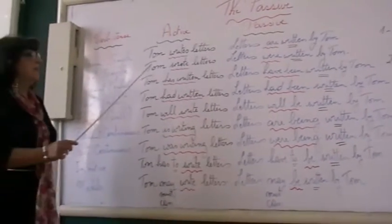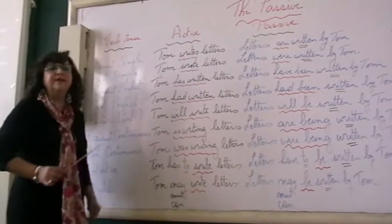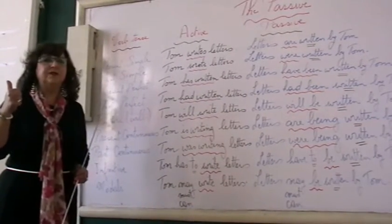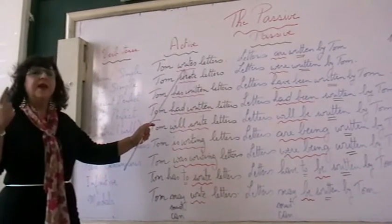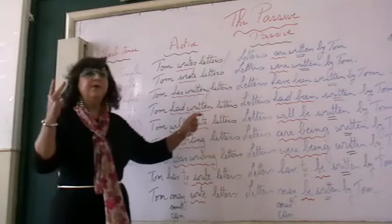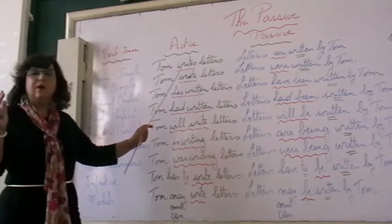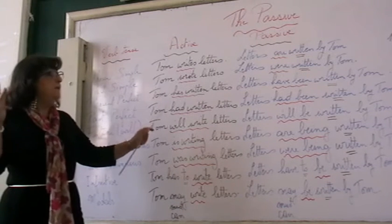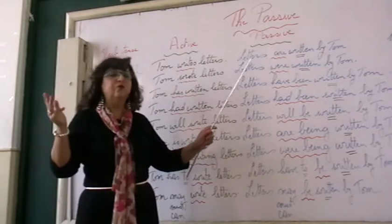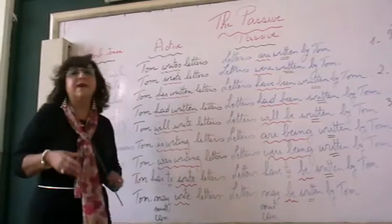These are the tenses you may use and how to change from active to passive. Whatever the sentence, you follow the same steps. Number one, look for the object and put it first. Number two, look at the verb tense and put 'to be' in the same tense. Number three, find the past participle — if it's an irregular verb, you have to memorize them; you have the list. Number four, look for the agent or doer of the action; if it's important, put 'by' followed by the agent.